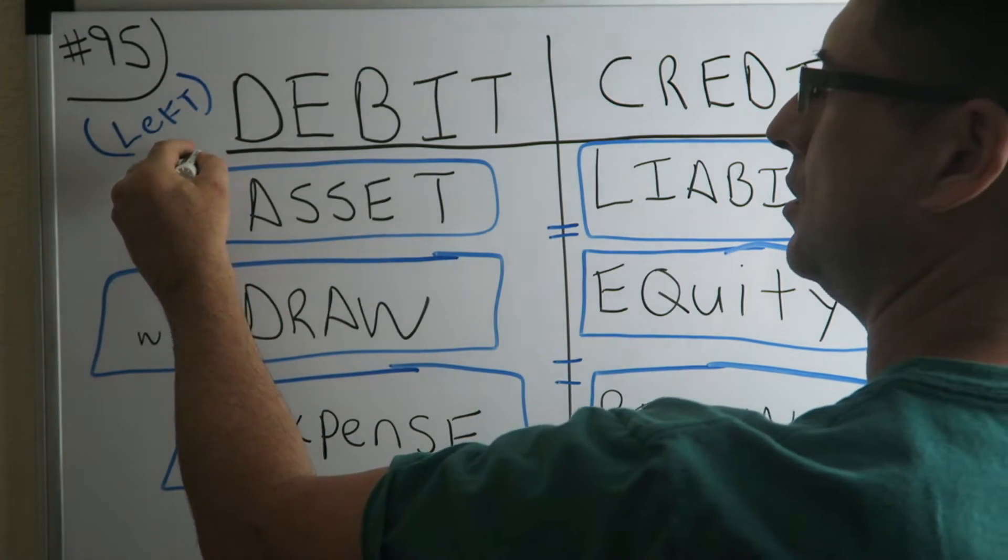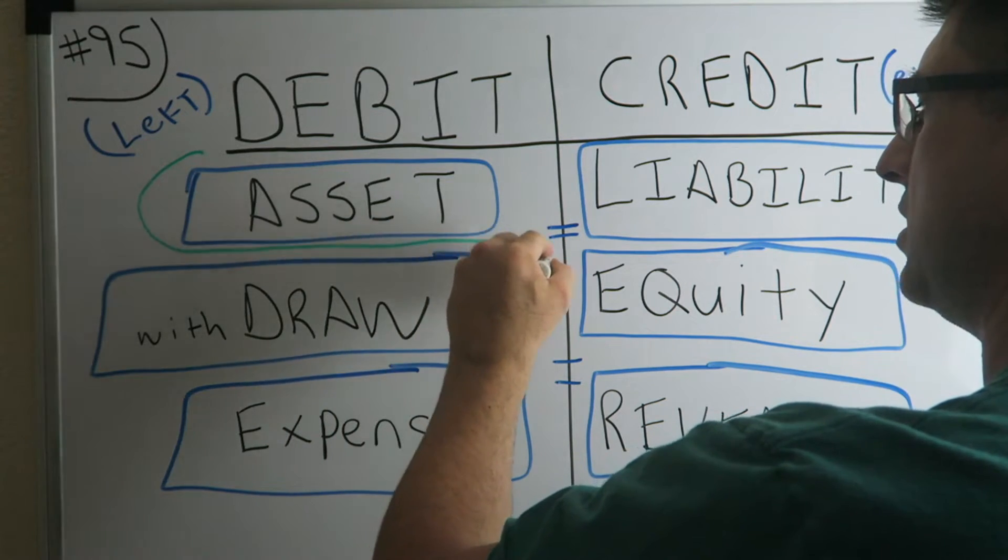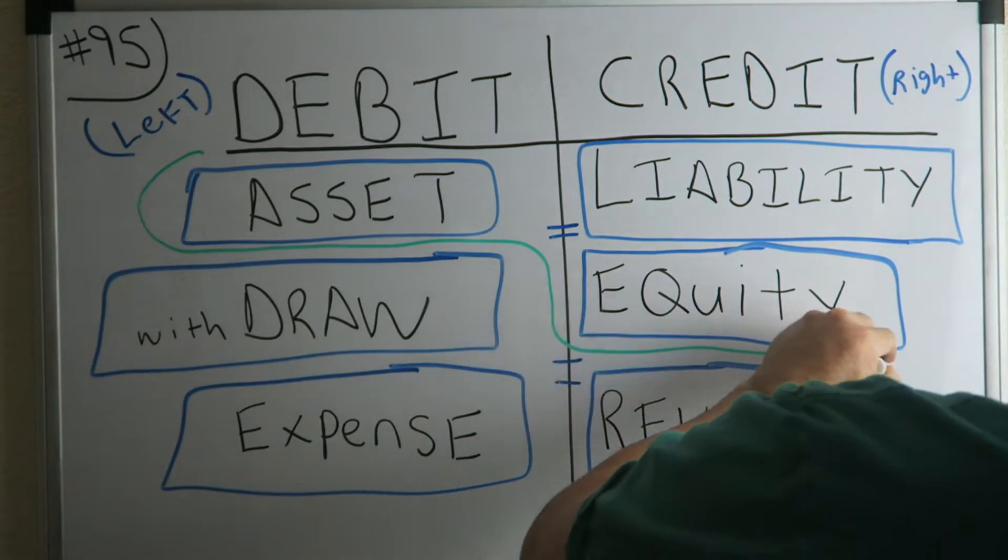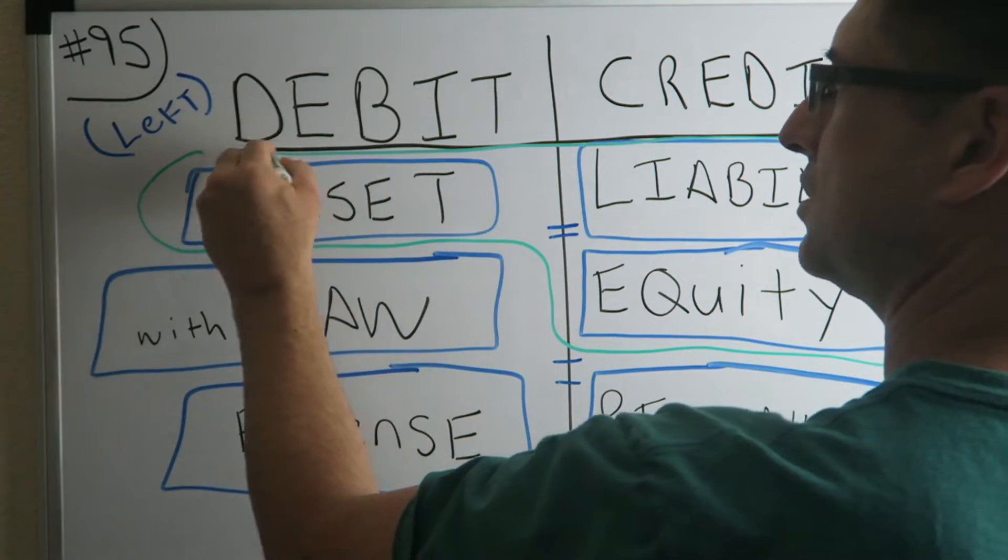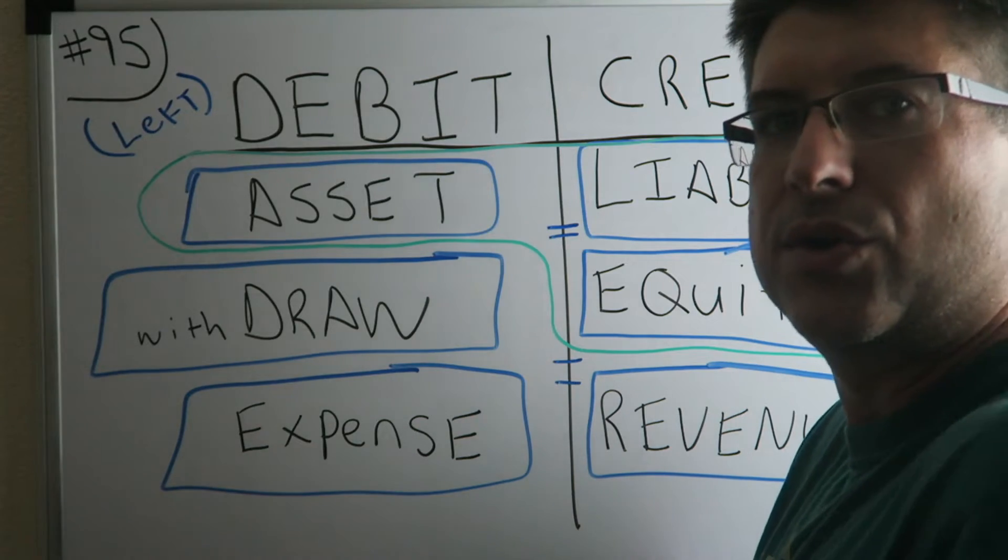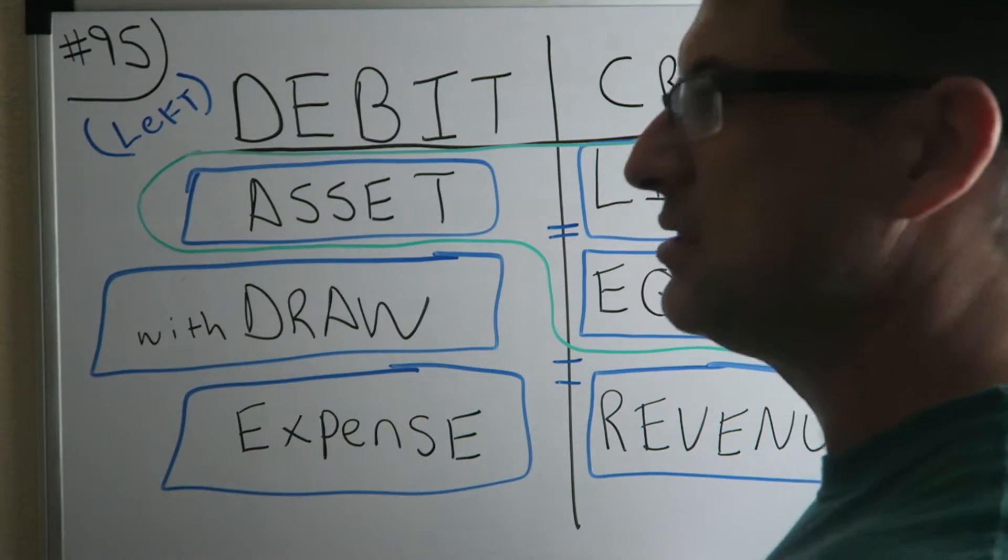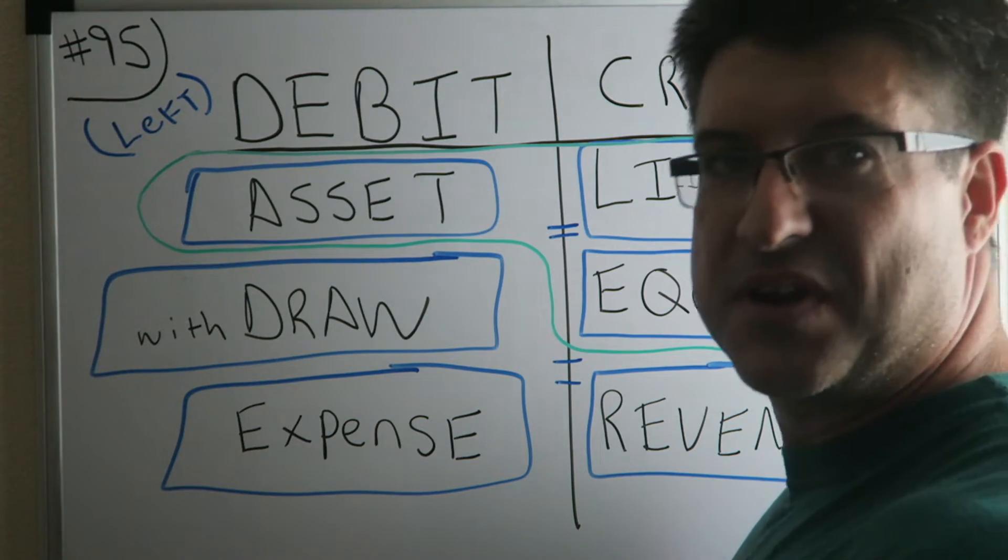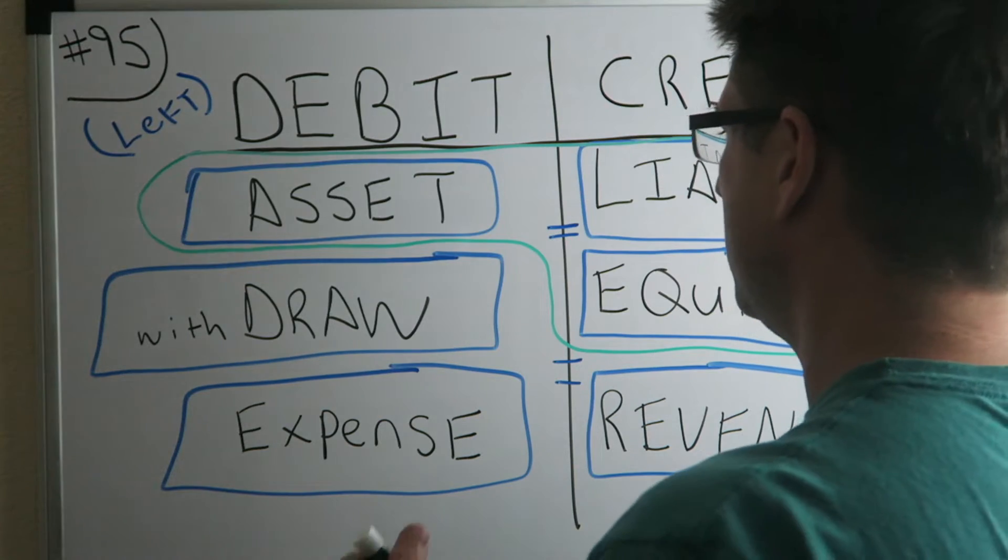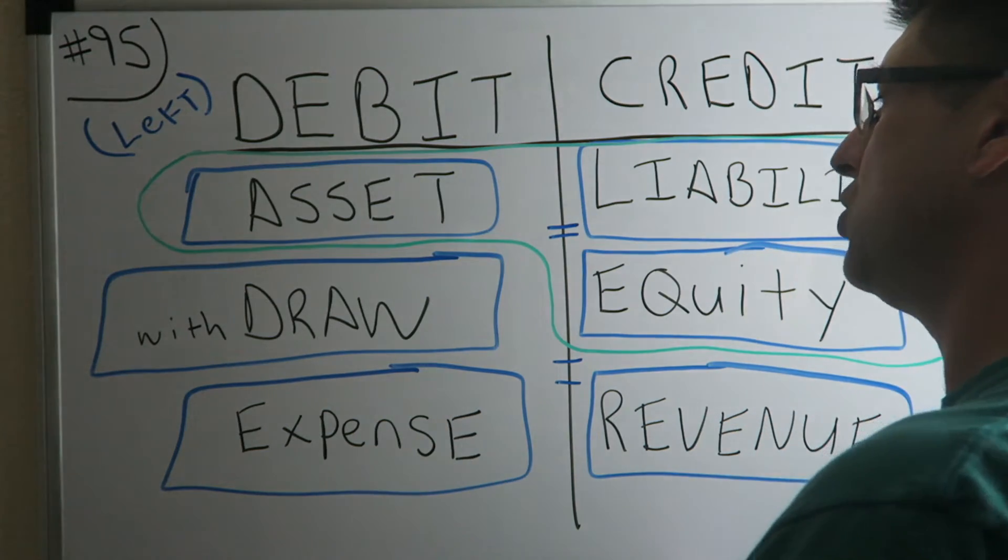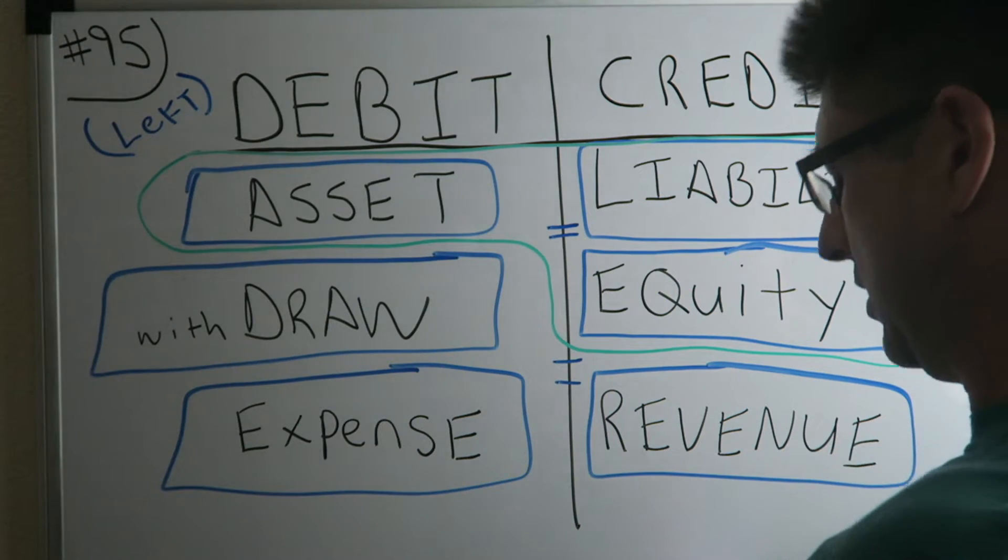He's saying that the assets equal liabilities plus equity, which it definitely, definitely does. Sorry about the lighting everybody, I don't know where my other light is right now. I know this is kind of weird, but I'm sorry, I just want to get some content out, get back in the groove. Rome wasn't built in a day. If I just waited until everything was perfect, I'd have no videos on my channel instead of three hundred and ten videos. So, it shows you the accounting equation, assets equal liabilities plus equity.